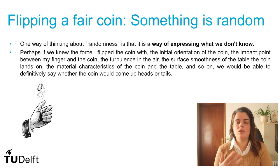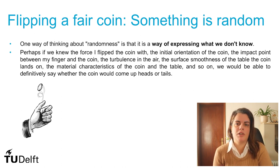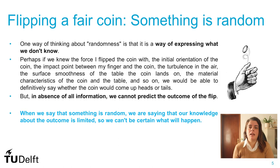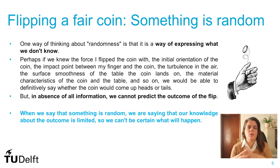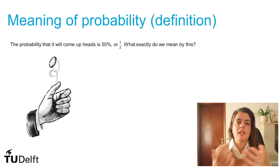Would it still be considered a random event? No, because you would definitely know if the coin would come up heads or tails. In that situation, the event would be deterministic, with a probability of 100%, and you would not need to apply probabilities at all. But in the absence of all information about the phenomenon, you cannot predict the outcome of the coin flip. So when we say that something is random, we are basically saying that our knowledge about the phenomenon is limited, and we can't be certain what will happen.